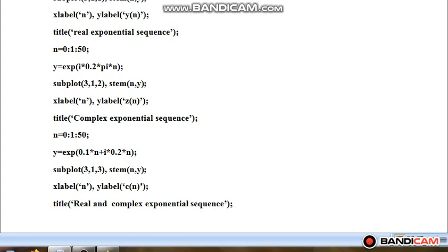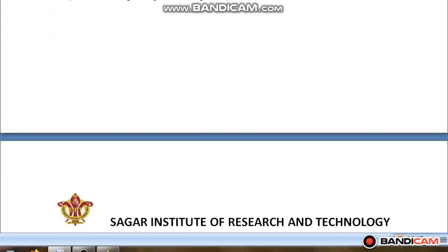Now, I will be plotting exponential signal which will be having both real part as well as complex part. So, Y is equal to exponential 0.1N plus j 0.2N. So, I will be taking subplot 3,1,3. So, this graph will be on the third place. Stem N, Y. X-label N. Y-label CN. This graph is represented by CN. And title I will give real and complex exponential sequence.